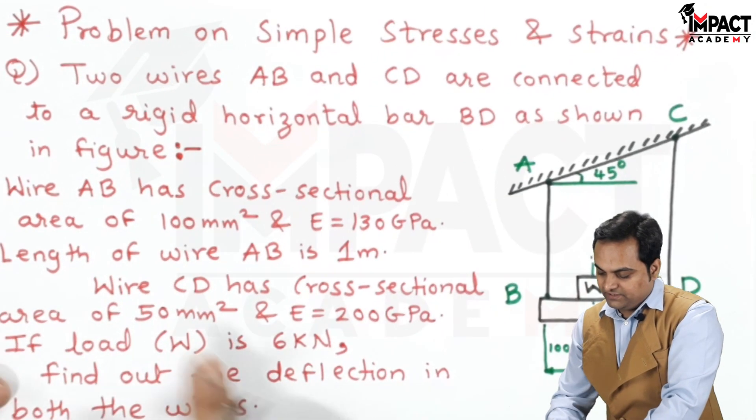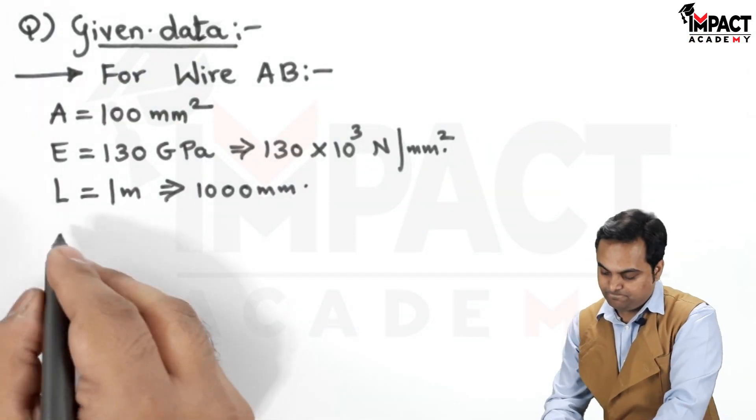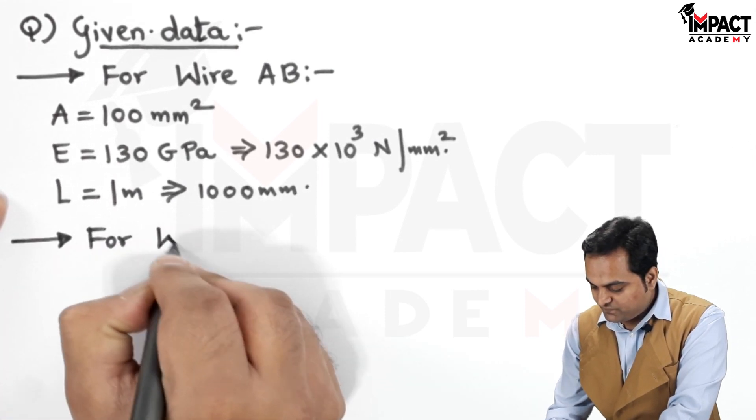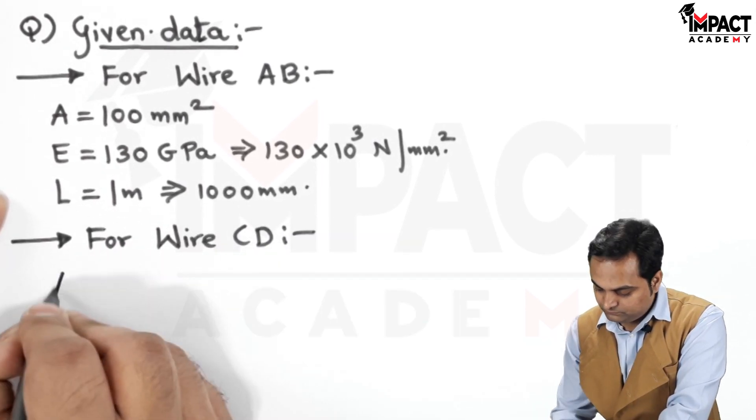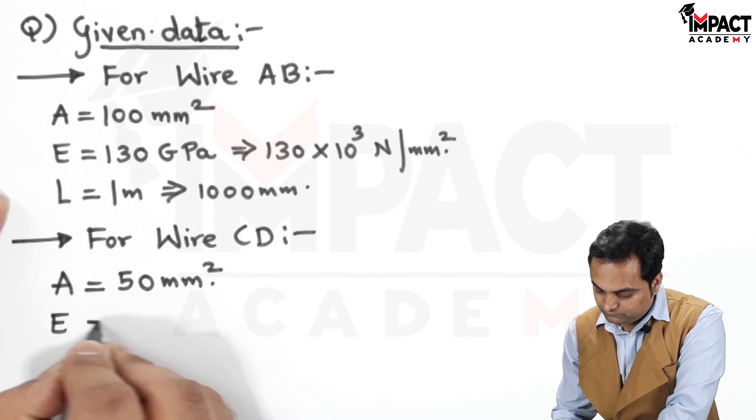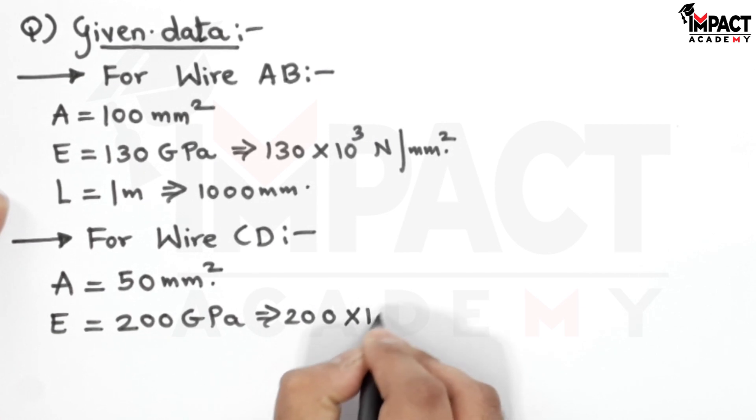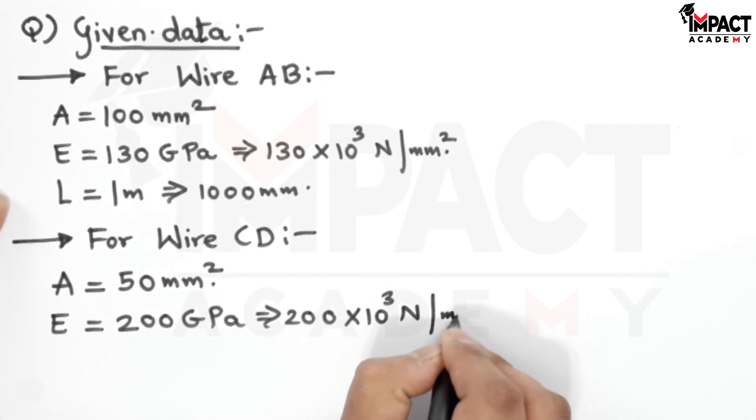Then, the length of the wire AB is 1 meter. Its length is given. So it is 1000 mm. Then, for wire CD, the cross-sectional area and Young's modulus is given. So it is 200 into 10 raise to 3 N per mm square.